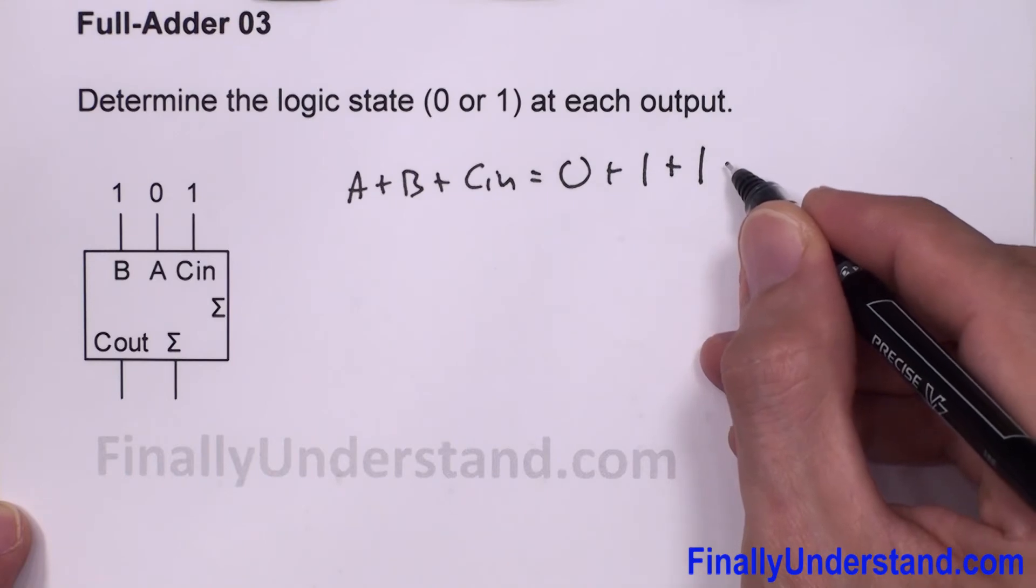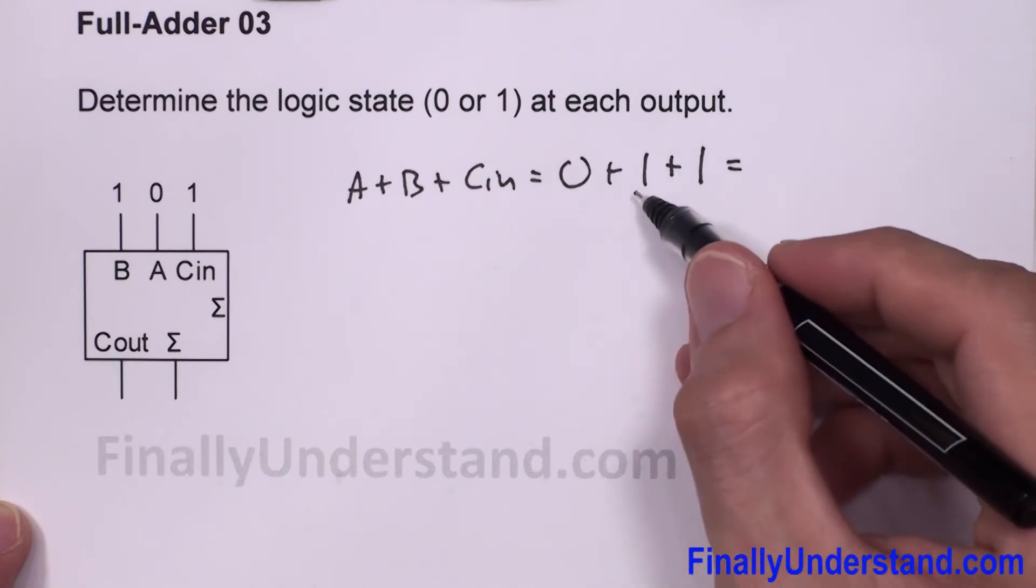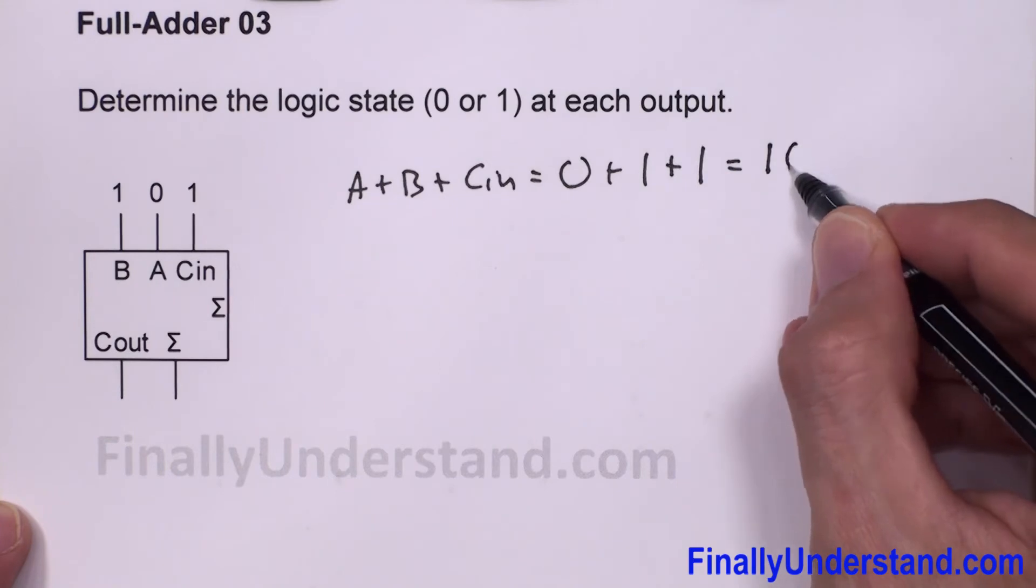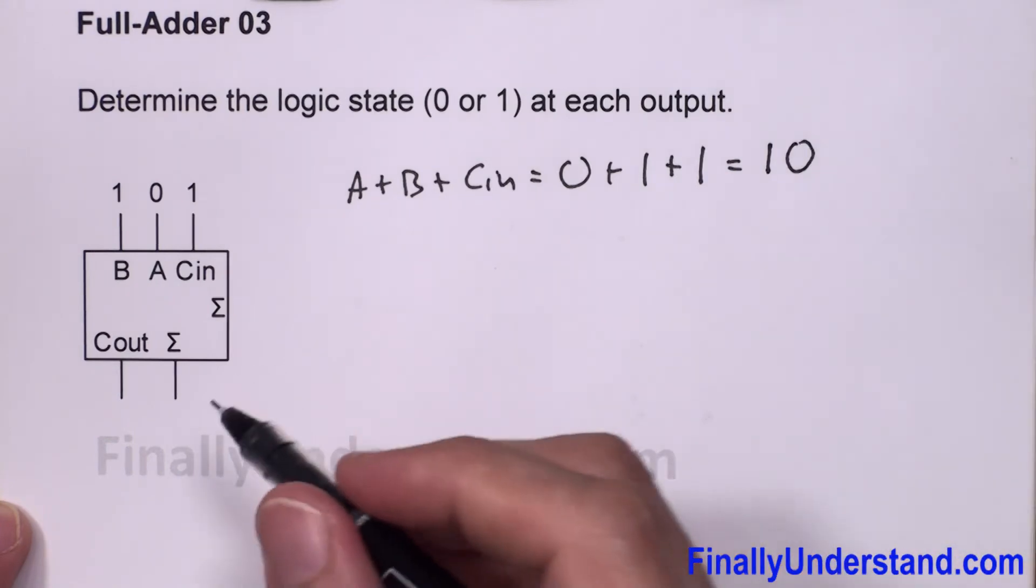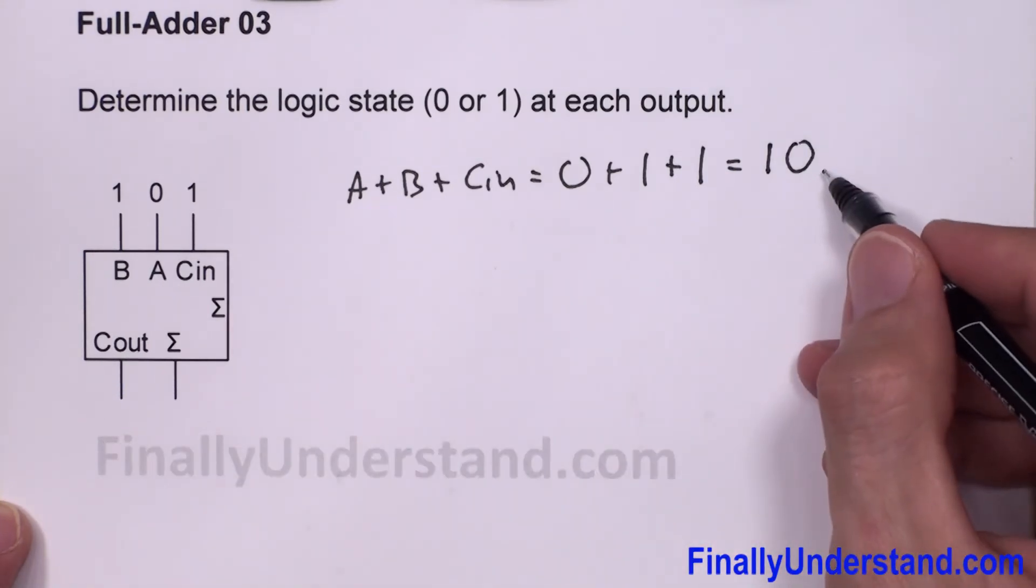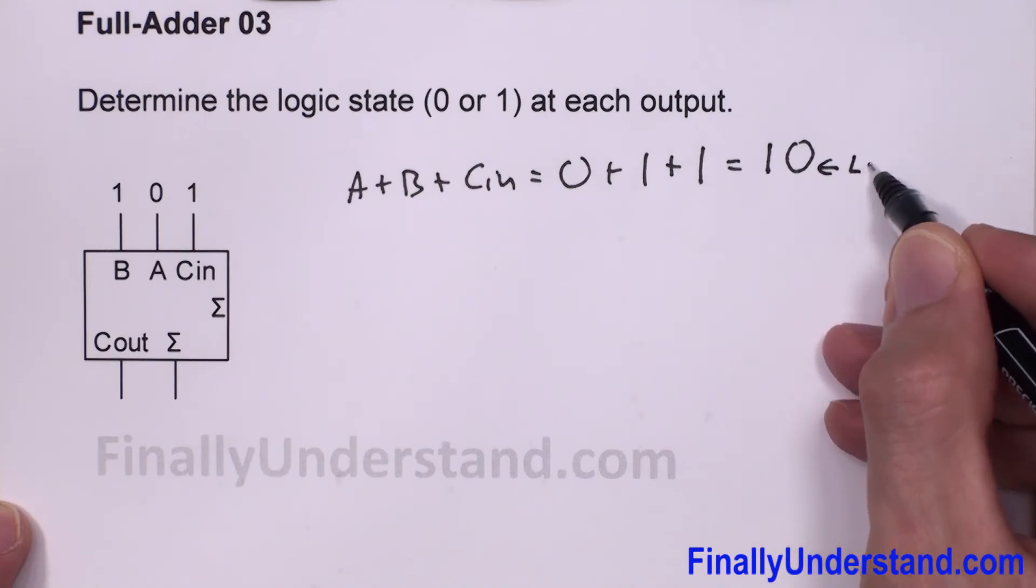This is equal to zero plus one plus one, which is equal to binary two. Of course, this is my least significant bit.